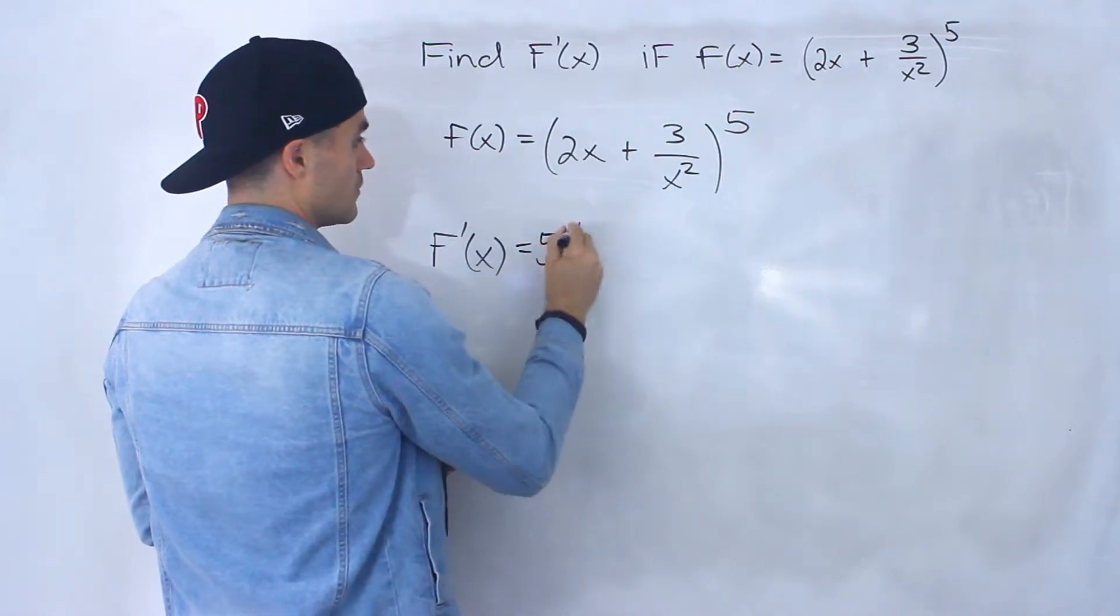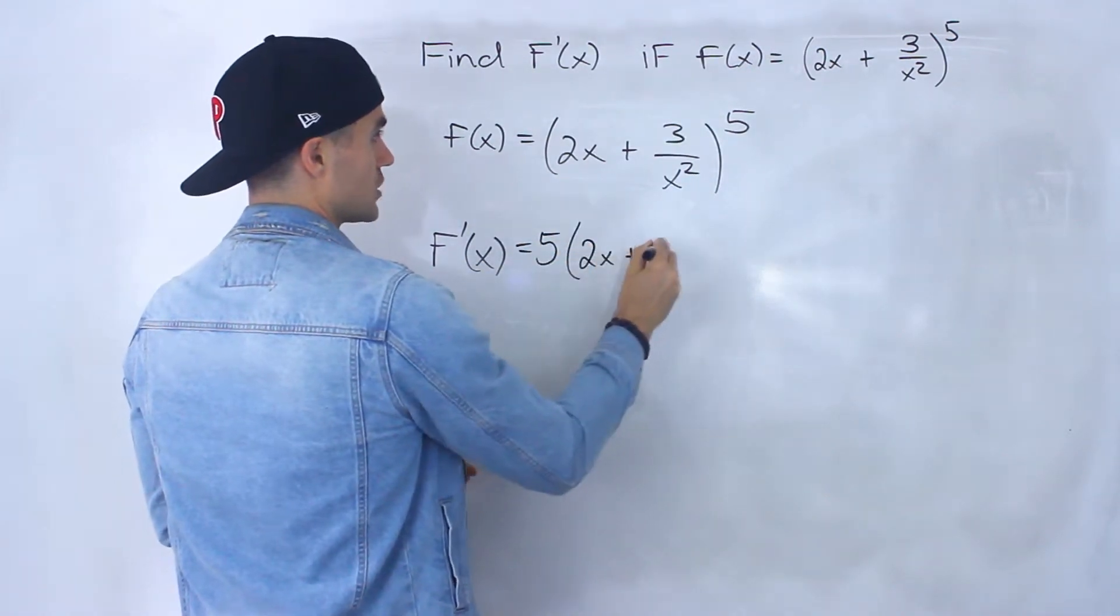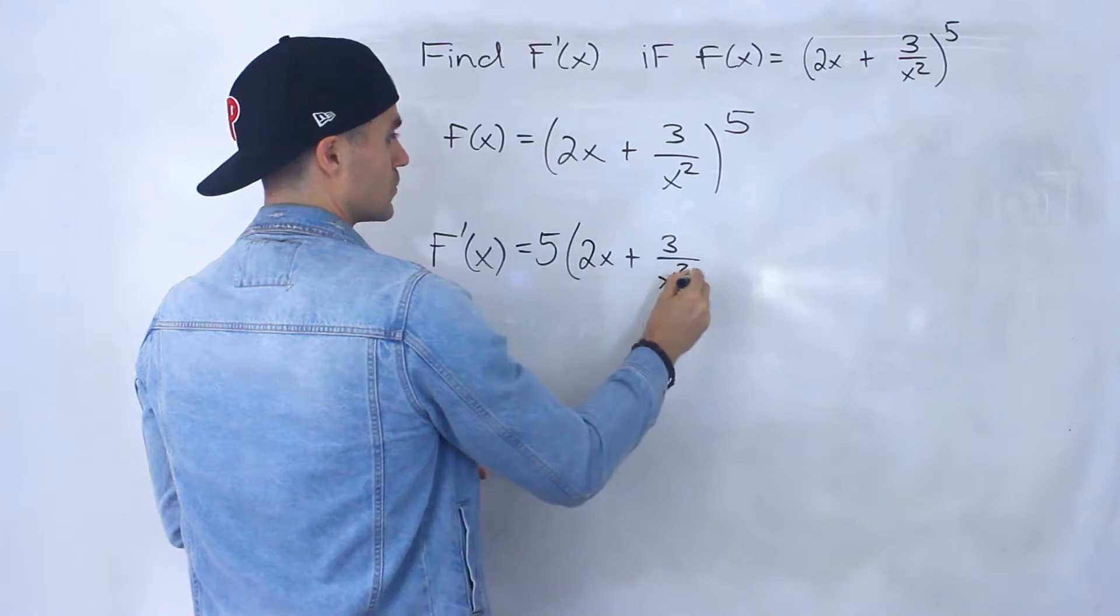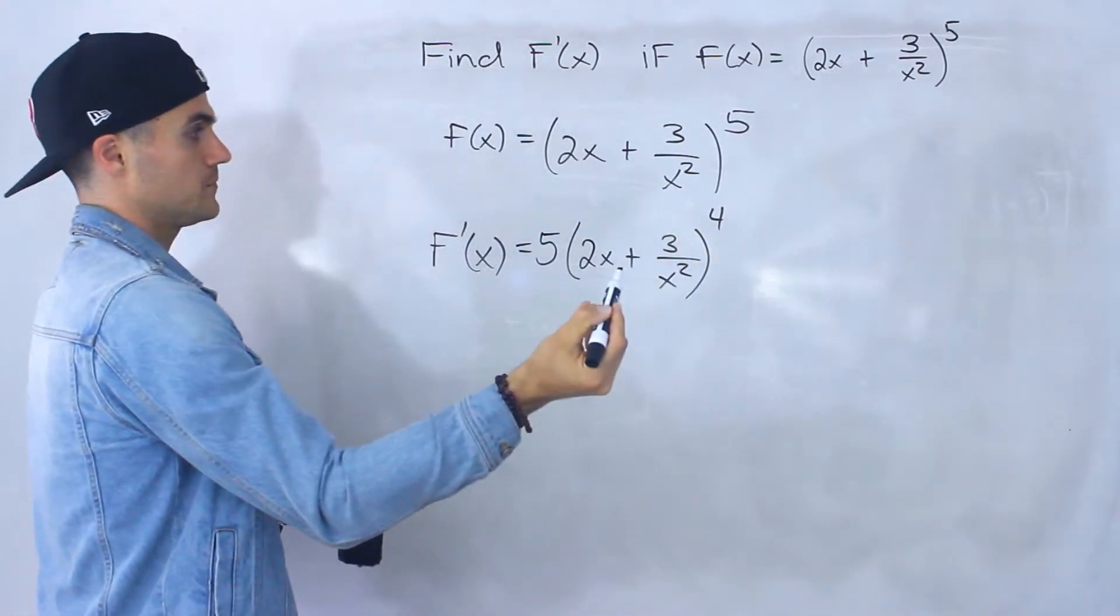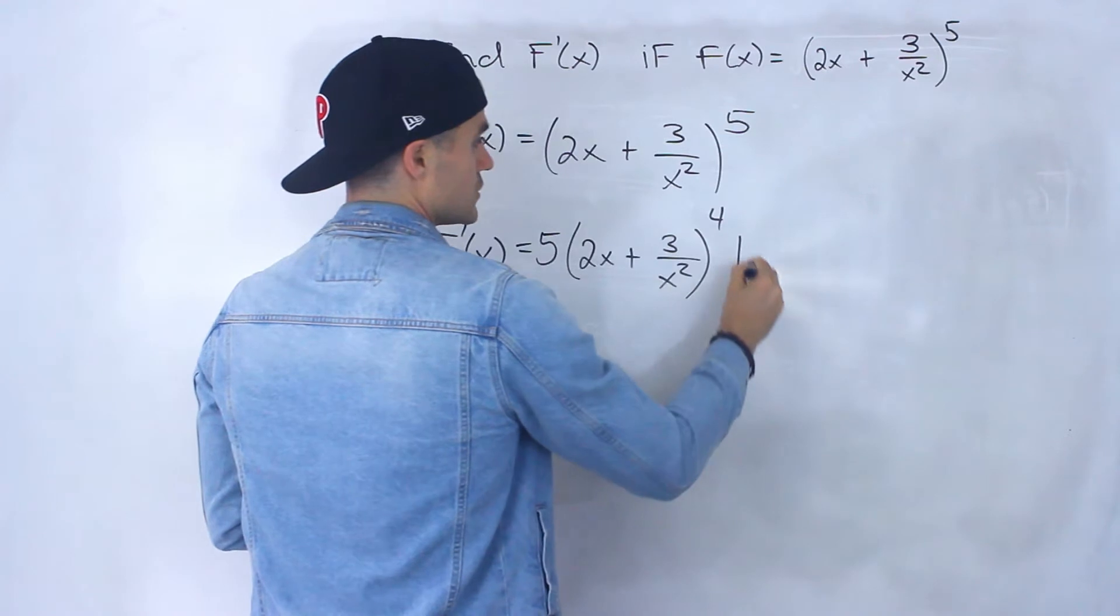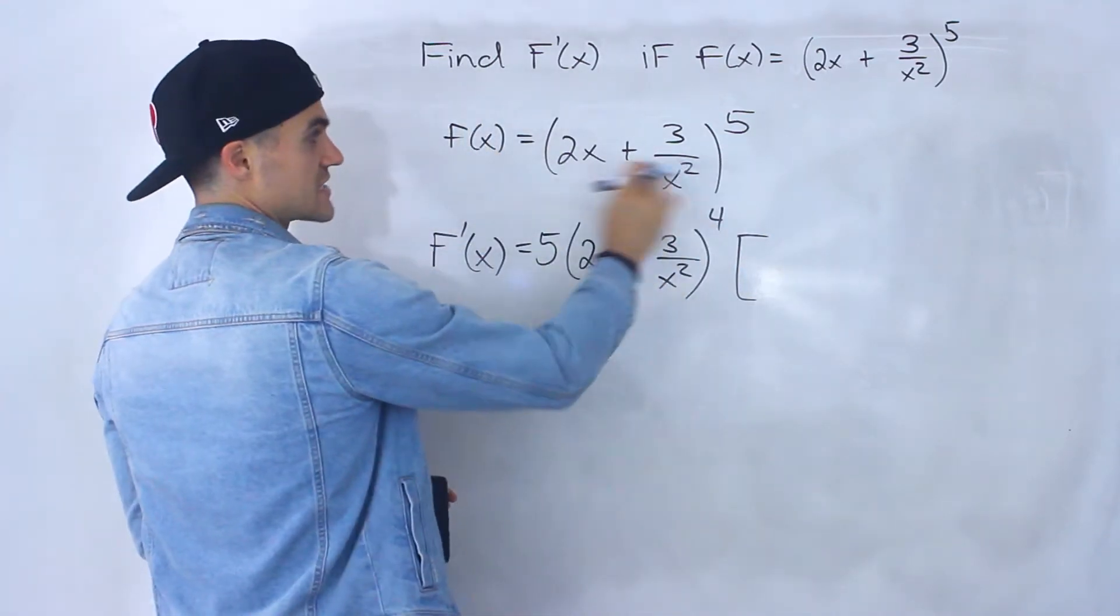So we would bring the 5 down. That inside function would stay the same. Subtract 1 from the exponent. And now what we would do is we would find the derivative of this inside function.